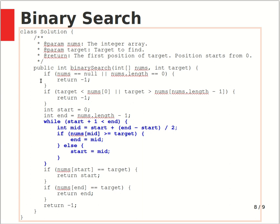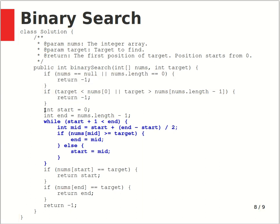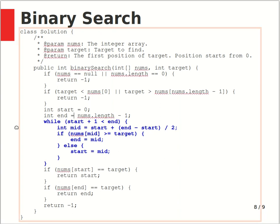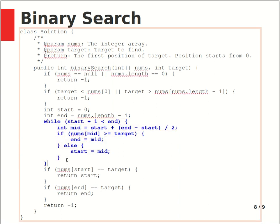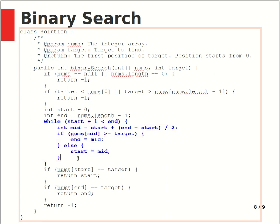All those if statements and assignment statements outside the while loop are O(1) — constant time. As I mentioned, you drop the non-dominant terms; those if statements are constant time and not dominant. The dominant term is actually inside the while loop, because you don't know how many iterations you have to go through. To compute the big O runtime, you need to determine how many iterations the while loop requires.